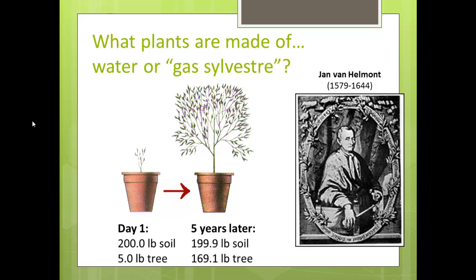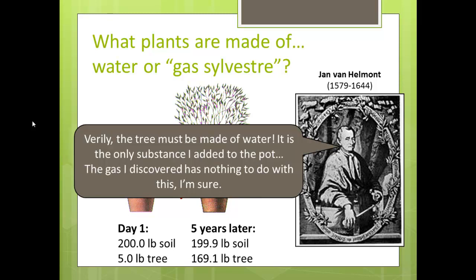He had a whole lot more tree — 169 pounds of tree. The only thing he had done the entire time was water it, so quite logically he concluded that the tree was made of water, that the water had turned into all the leaves and wood, because it was the only thing he added to the pot. Now, we know that wasn't the whole picture, but it was a start. Remember, this is a step-by-step process.